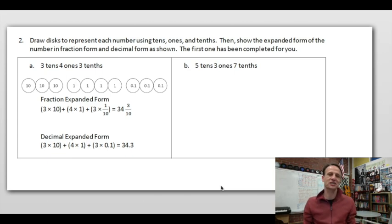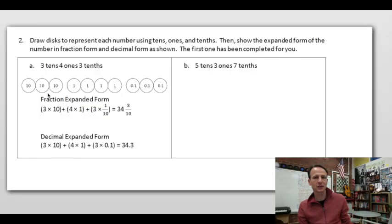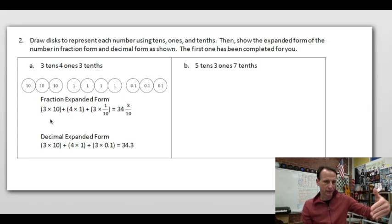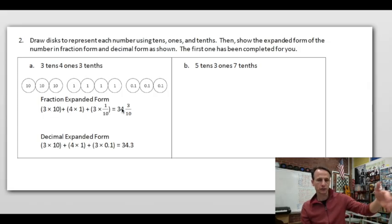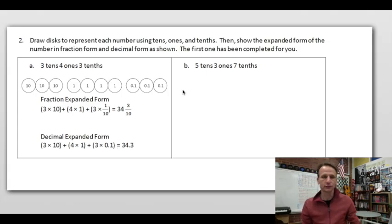Number two has a lot to do. Look at the instructions and the sample they completed for us. We're to draw place value discs — numbers in circles — to represent each number using tens, ones, and tenths. Then show the expanded form in fraction form and decimal form. The first one is completed: three tens, four ones, three tenths translates to three times ten, four times one, three times one tenth — which is thirty-four and three tenths.